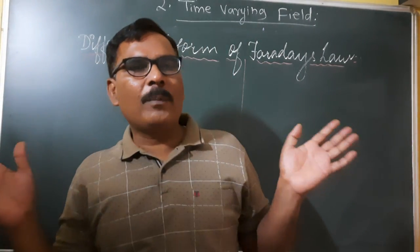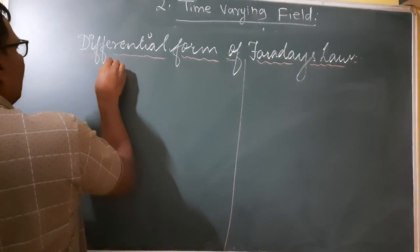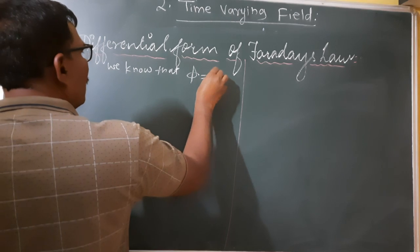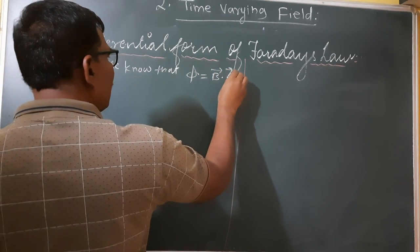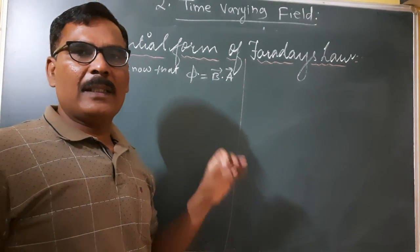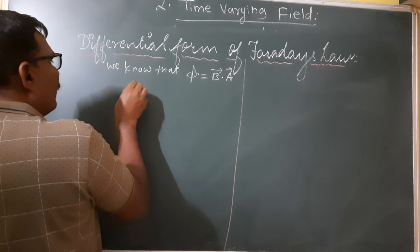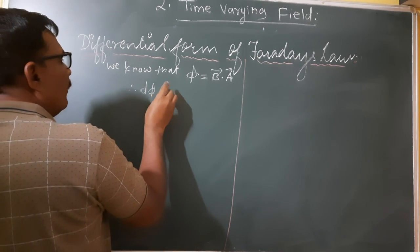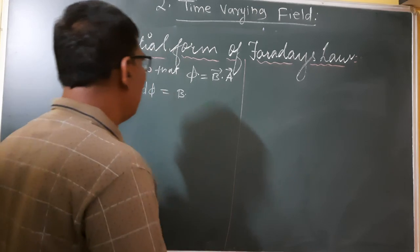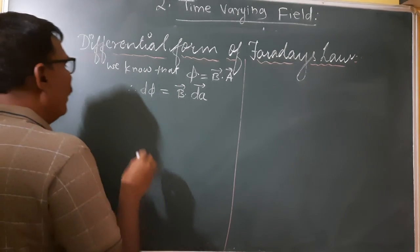First of all we need to know that phi equals B-bar dot A-bar. This is the basic definition of magnetic flux, where B is the magnetic induction and A is the surface area. Differentiating this, d-phi equals B-bar dot dA-bar.